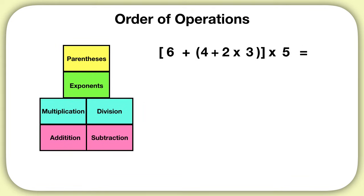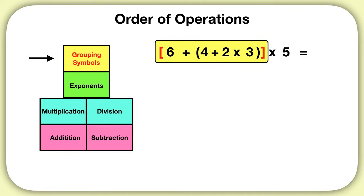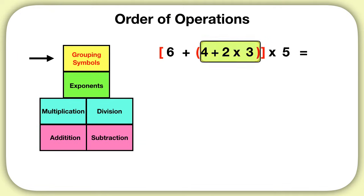In this equation, instead of just looking for parentheses, we actually want to look for any type of grouping symbol, because we notice that this problem has these brackets. These brackets act just like parentheses. Inside of these brackets, we actually see another set of parentheses, so we will solve those first. And inside of those parentheses, we see we have addition and multiplication. We know we need to solve multiplication first, so 2 times 3 is 6.